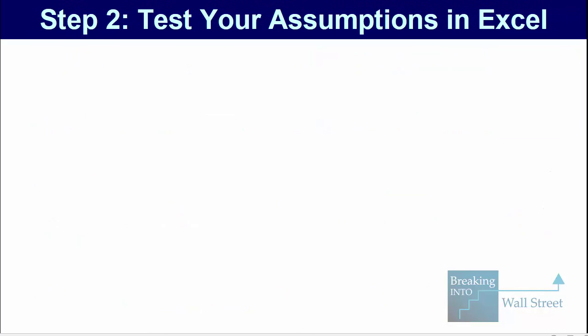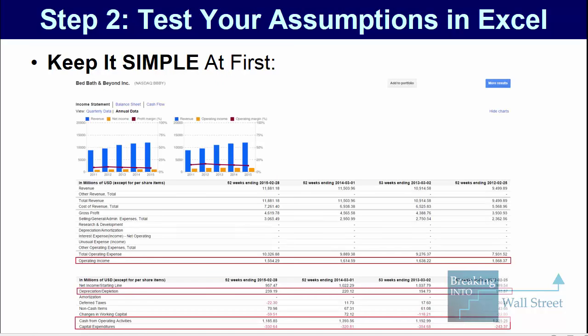That takes us into step two, which is testing our assumptions in Excel. Initially, I recommend keeping this very, very simple. Go to Google Finance, look at the income statement and cash flow statement there, and you'll get the company's revenue, operating income, depreciation and amortization, cash flow from operations, and capital expenditures — really all you need to do a simple initial version of this model. Don't make it overly complicated. You're just trying to test out your assumptions.